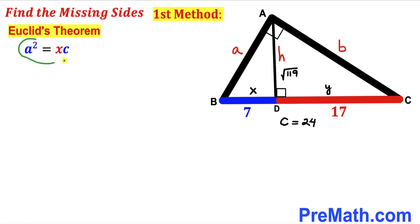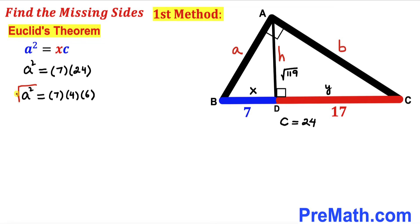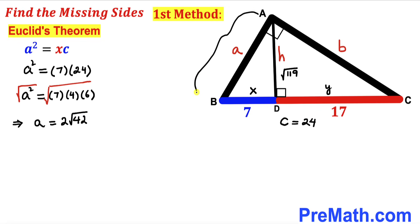Here is the second Euclid's theorem: a² = x·c, where x = 7 and c = 24. So a² = 7 × 24. We can rewrite 24 as 4 × 6, giving us 4 × 42. Taking the square root on both sides, the square root of 4 is 2, so our lowercase a value is 2√42. Therefore, side AB = 2√42.